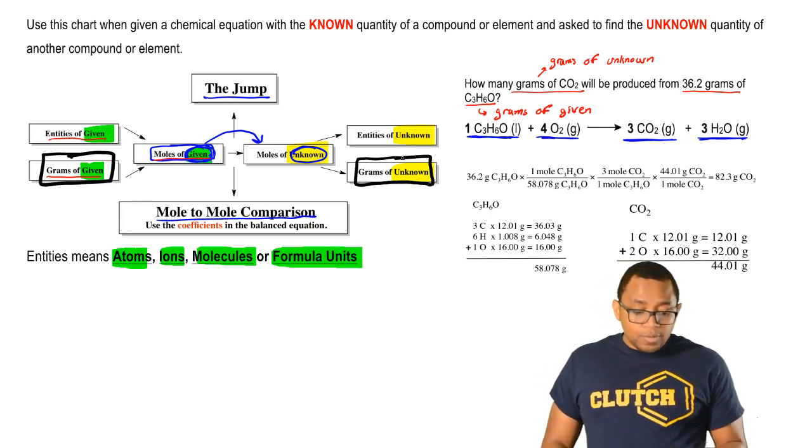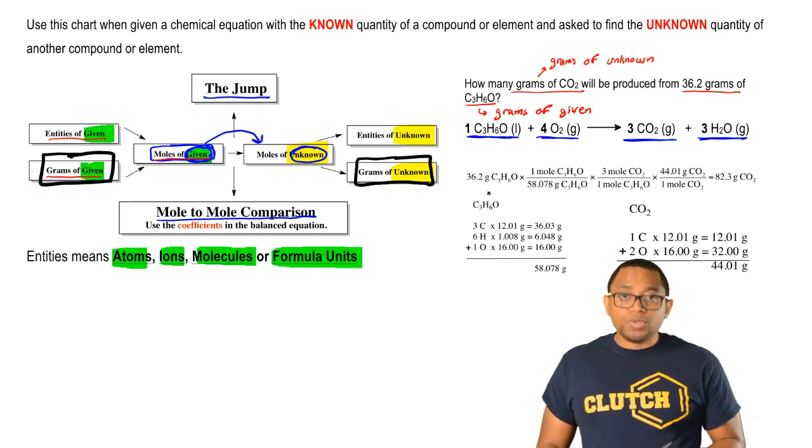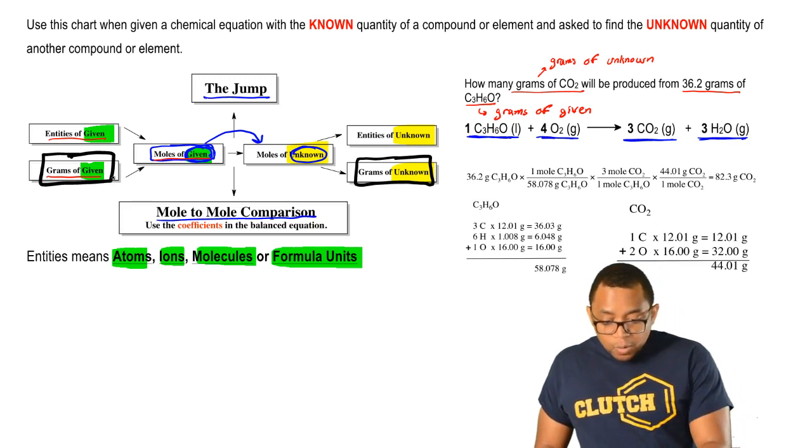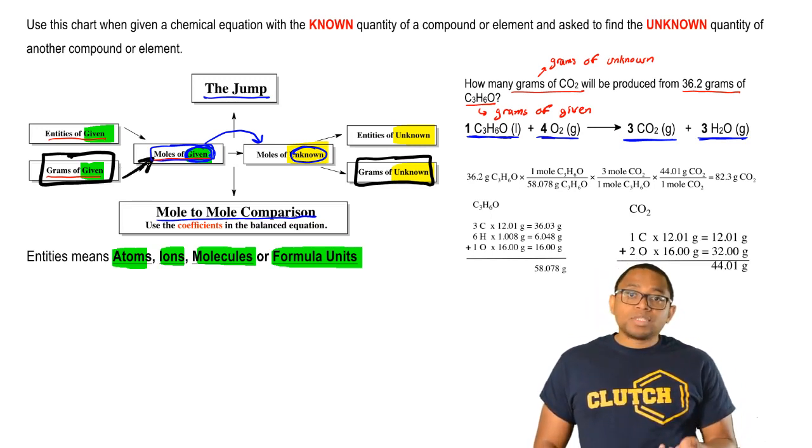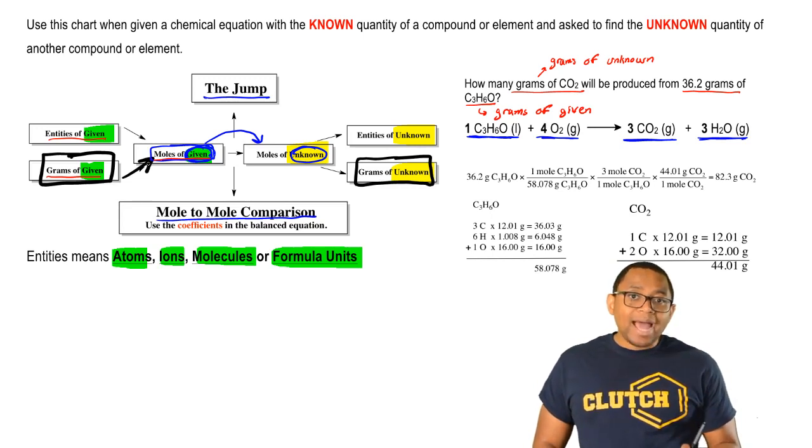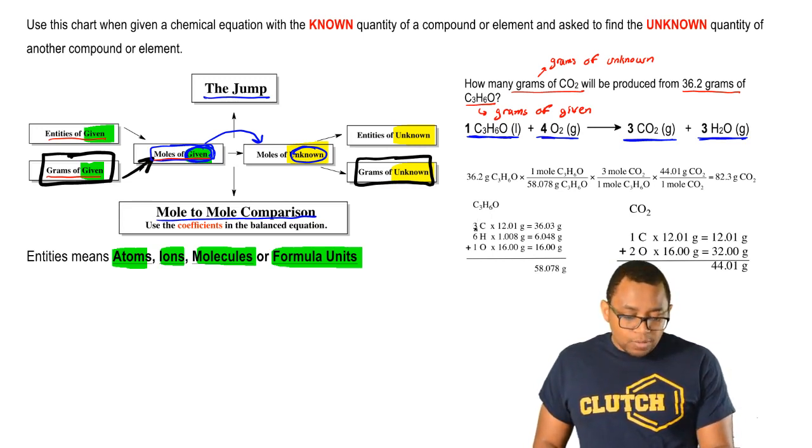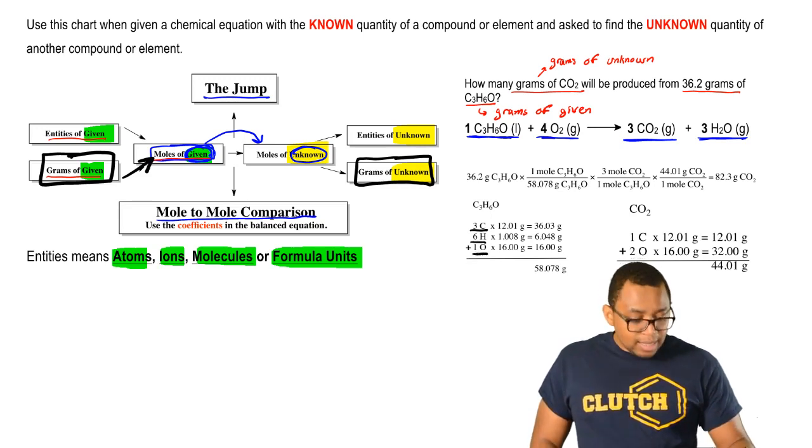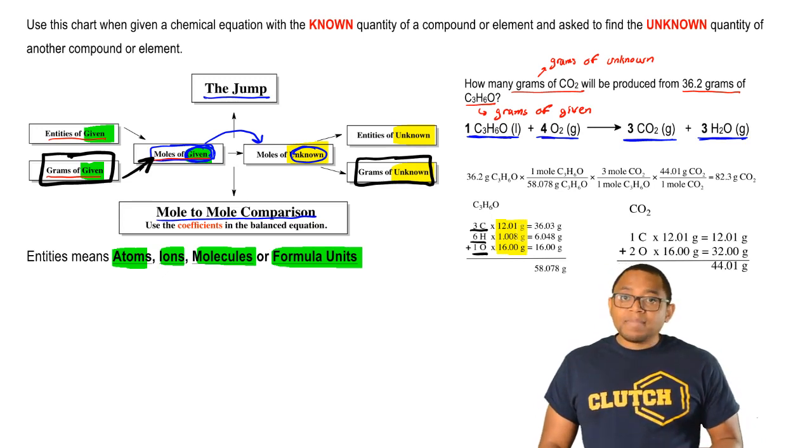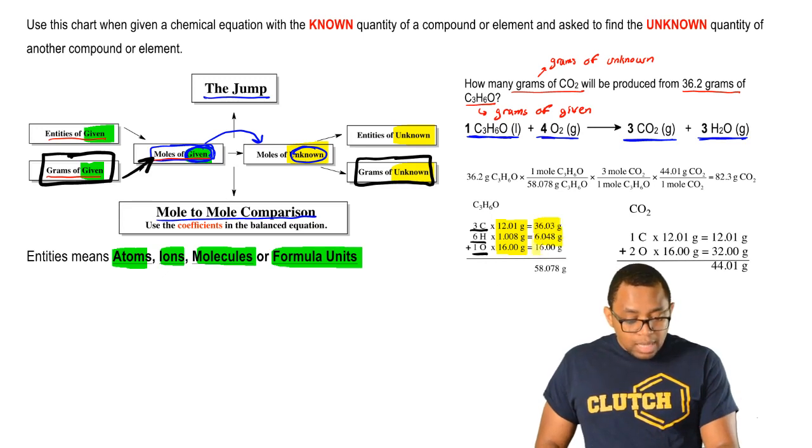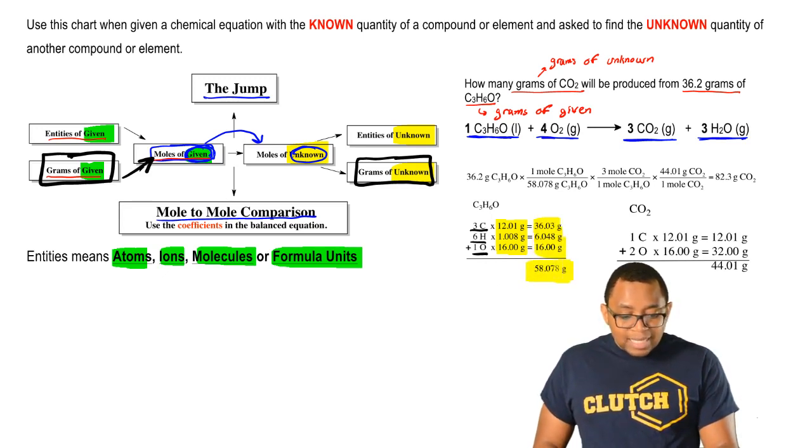The first thing we're going to do is we write down we have 36.2 grams of acetone. We have to go from grams of given to moles of given. To change grams to moles, we use the molecular mass of acetone. Acetone has in it three carbons, six hydrogens, and one oxygen. These numbers here come from the periodic table. They are the atomic masses of each of those elements. When we multiply them by the number of each element, we get a total. We add them up when we get the mass of the compound.